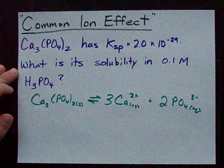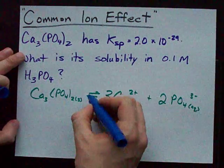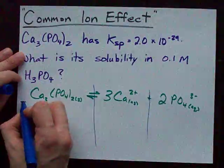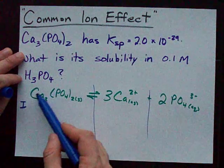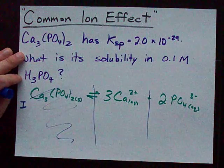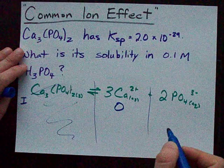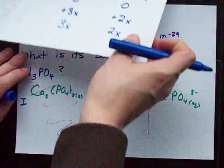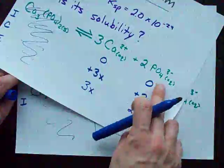If I was going to do an ICE table for this, and this is the important bit, my initial concentrations are: doesn't matter because it's a solid, 0, and in most questions, we would start with no phosphate as well.